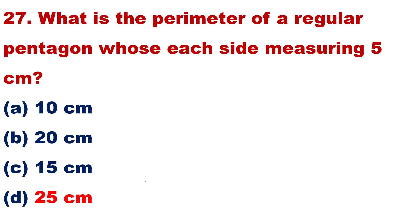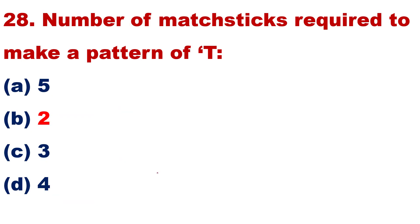Question number 27: What is the perimeter of a regular pentagon whose each side measuring 5 cm? Each side, regular pentagon. Question number 28: The number of matchsticks required to make a pattern of T. Take your correct answer.